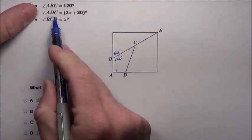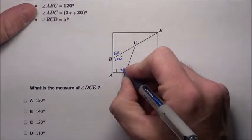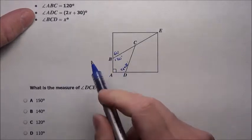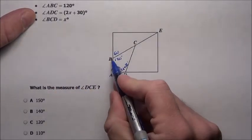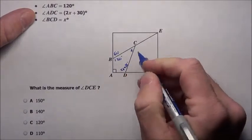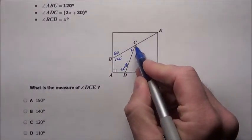It says angle ADC has the expression 2x plus 30. Can't do anything there yet. Angle BCD, B to C back to D, that is x. Right now, if that's x, I could say that's 180 minus x, but I'm not worried about that.